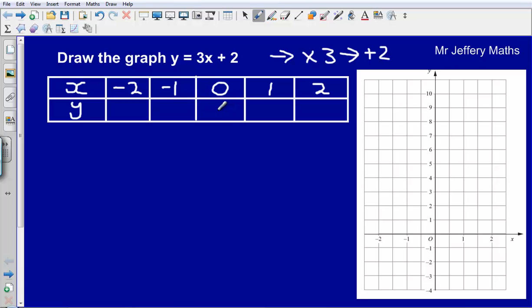Let's take a look at the first one. 0 multiplied by 3 add on 2 gives us 2. 1 multiplied by 3 add on 2 gives us 5. 2 multiplied by 3 add on 2 gives us 8.